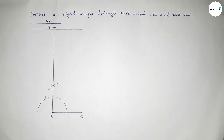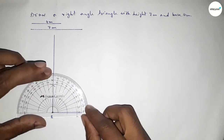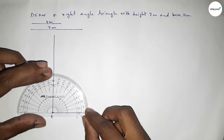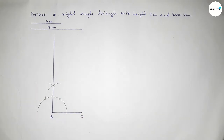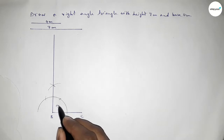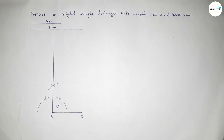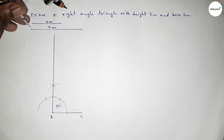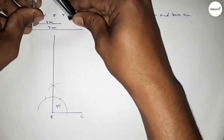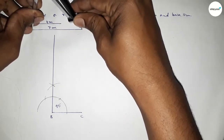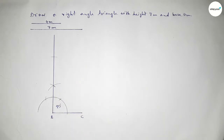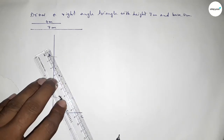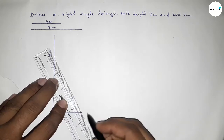Now checking whether it is 90 degrees or not — this is perfectly a 90 degree angle. Taking the height of 7 centimeters using the compass and putting the compass on point B, cutting at that length to mark point A.